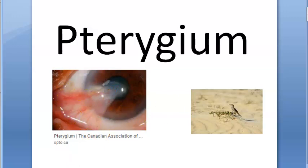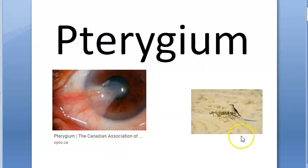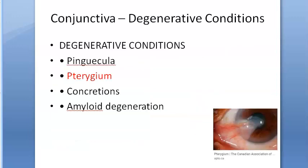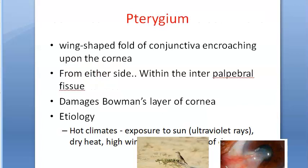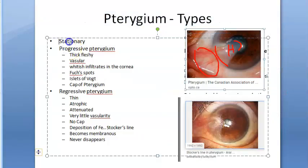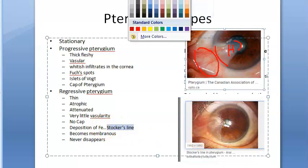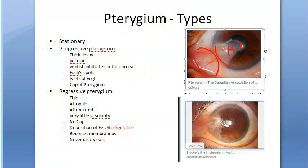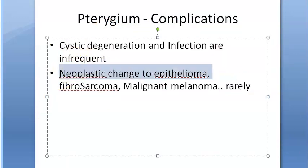Pterygium is a wing-like fold — a degenerative condition of the conjunctiva. If it has active blood vessels, it is progressive. It can affect vision by encroaching on the pupillary area. It can destroy Bowman's layer and corneal epithelium. Three types: stationary, progressive, and regressive. In regressive pterygium, remember Stocker's line — an iron deposit. This is important.